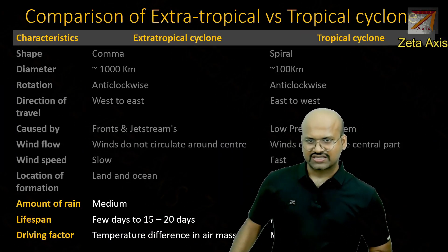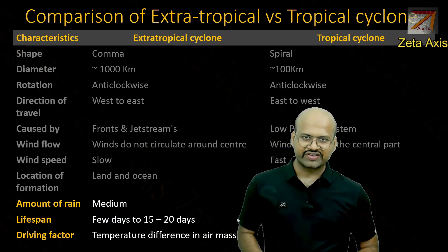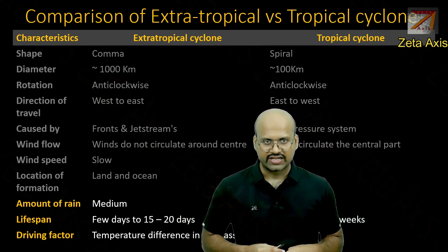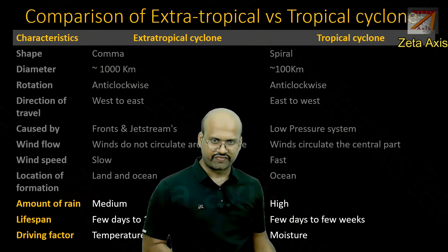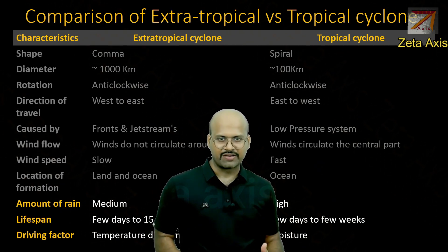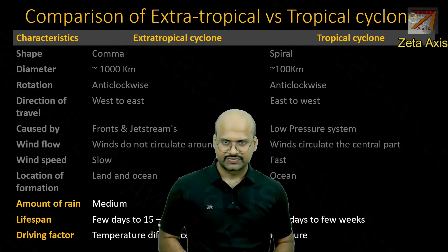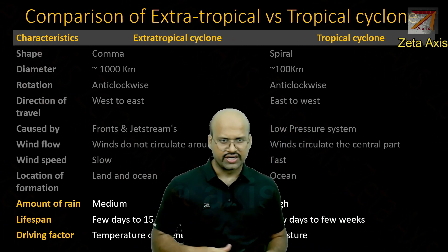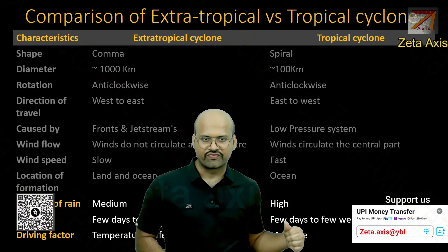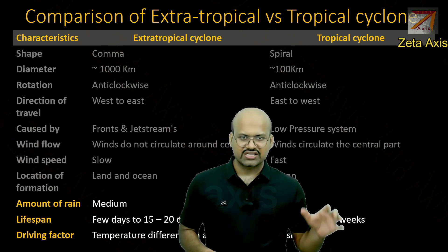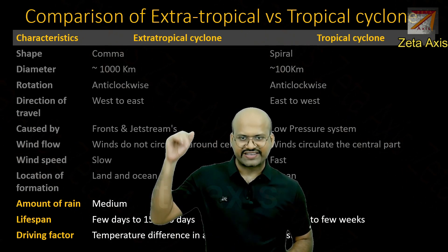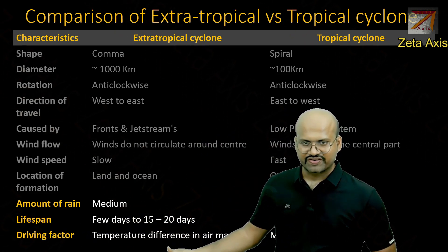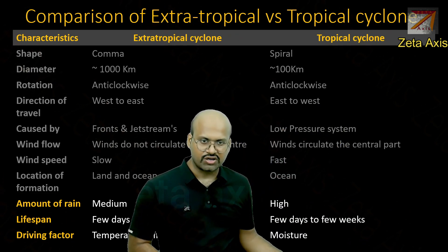There are some other factors like amount of rain. The amount of rainfall received in extratropical cyclones is medium — it does not give that much rainfall. In tropical cyclones, we receive a very high amount of rainfall with a huge spike when a tropical cyclone approaches a region. The lifespan of extratropical cyclones is generally 15 to 20 days, which is longer. Tropical cyclones can last from a few days to a few weeks but generally have a shorter life. The driving factor for extratropical cyclones is temperature difference between air masses — the two fronts — while for tropical cyclones it is moisture.